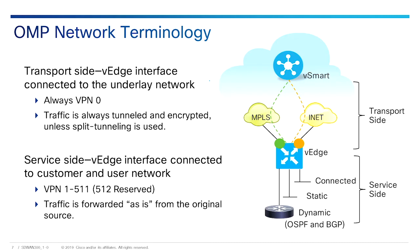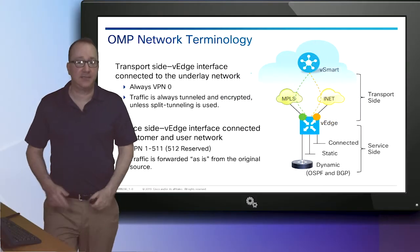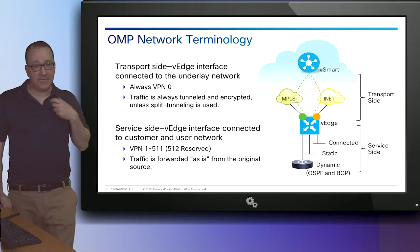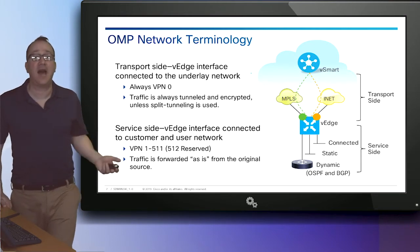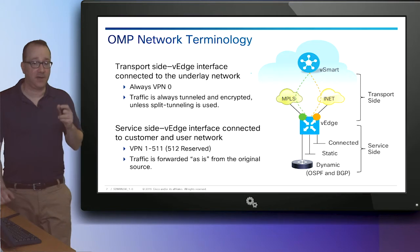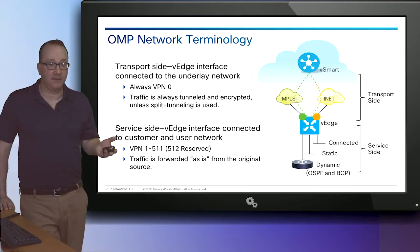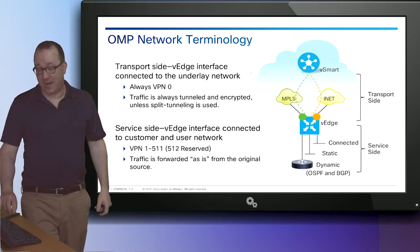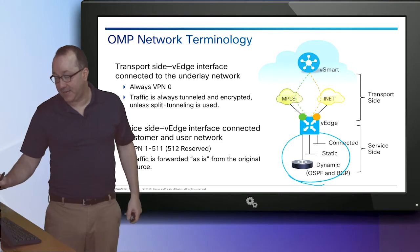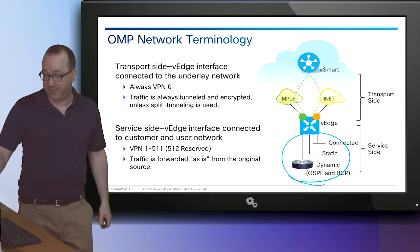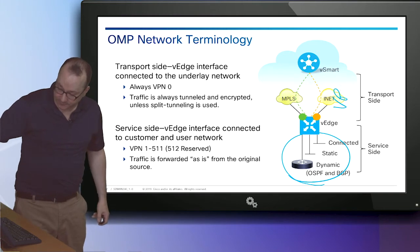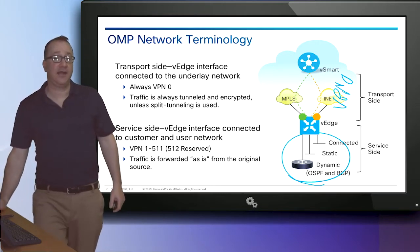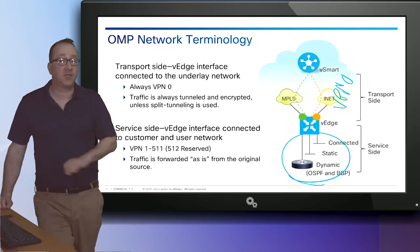Here's some important terminology. VPN 0 means the transport side — that's always going to be VPN 0. VPN 512 is the management VPN. And VPNs 1 through 511 are going to be for the service side, meaning the inside of the site network. VPN 0 is our overlay network running on top of our MPLS and internet connections, and it's always going to be tunneled and encrypted, unless we use split tunneling to route to the internet.